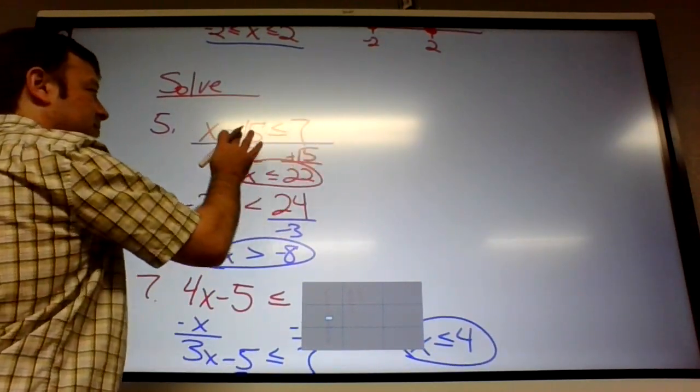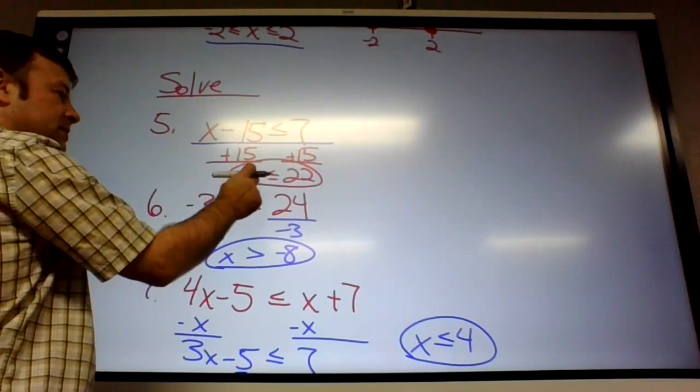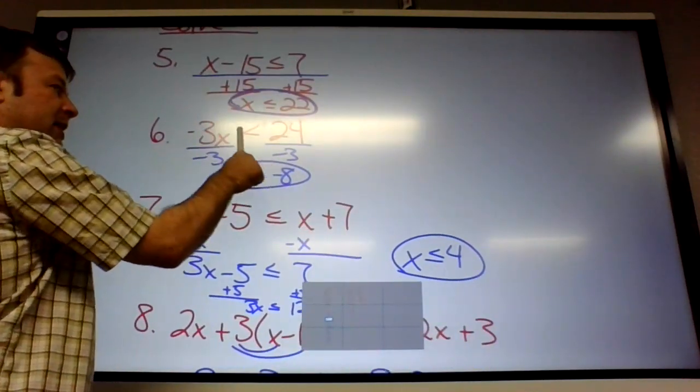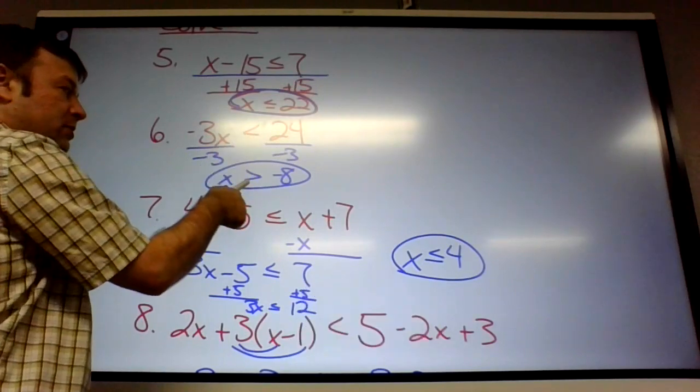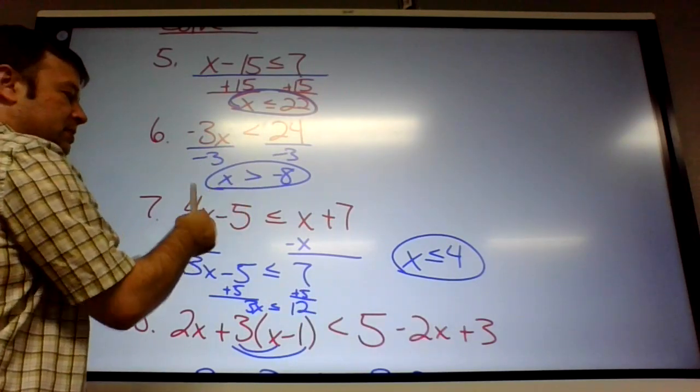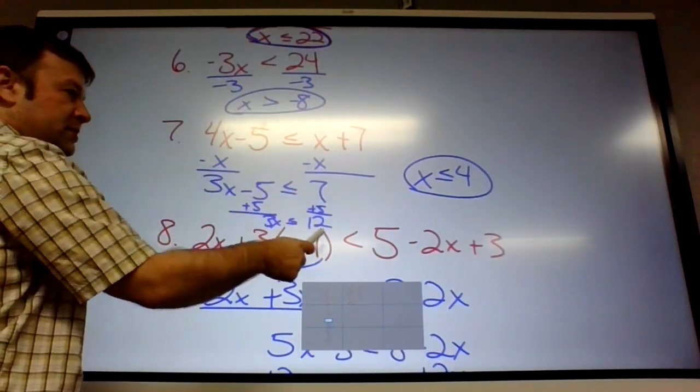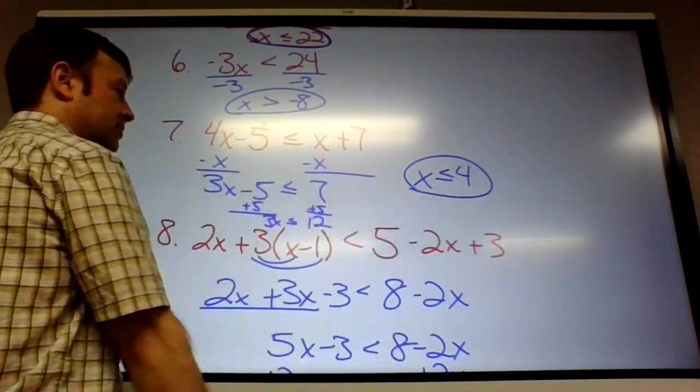So here was the question, just plus 15. Here's the answer. Divide by negative 3. When you divide by the negative, the inequality switches. X is on both sides. The answer's over there.